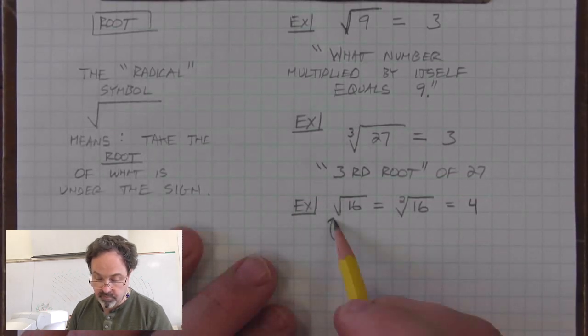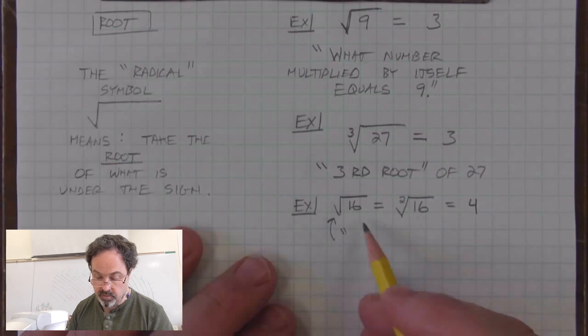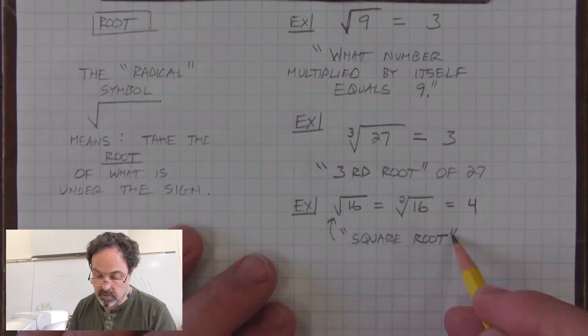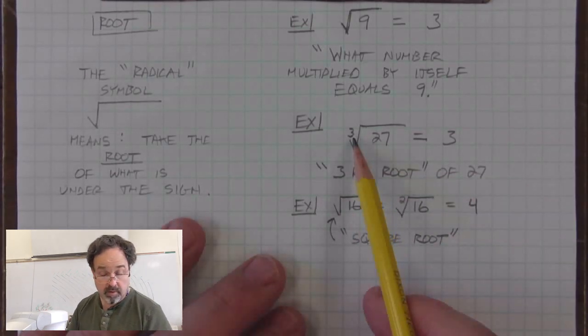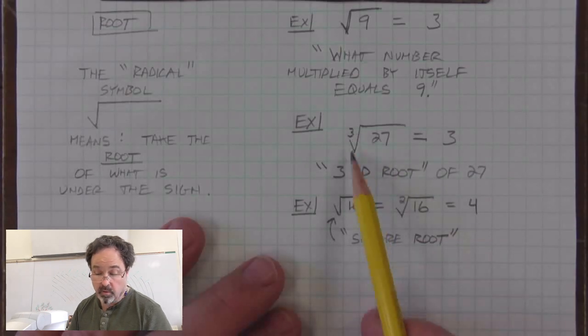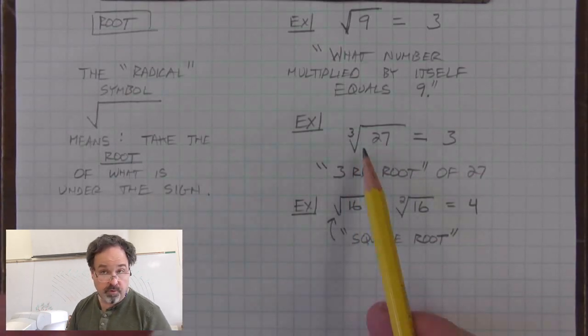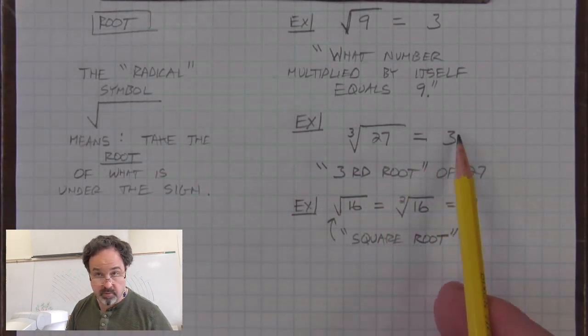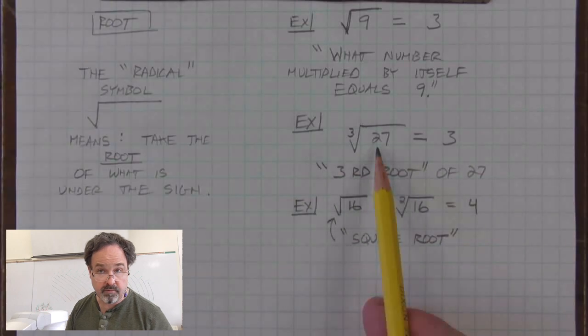When we don't see a number here, we call this a square root. When there is a number, such as 3, we call this the third root or cube root. That means we have to find the number that when cubed equals the number under the radical sign.